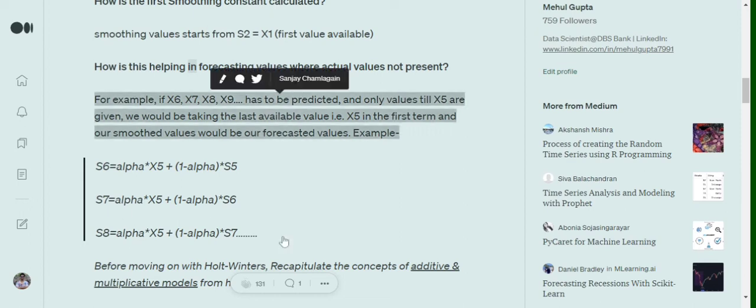Now as you can see in the example, if our time series ends at X5 only, but we wish to calculate some more future smoother terms, that is what we were calling out as forecasting.